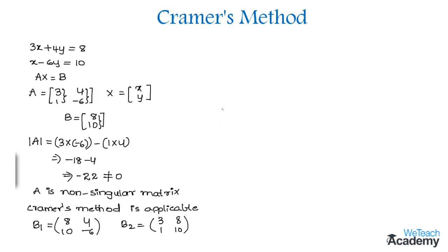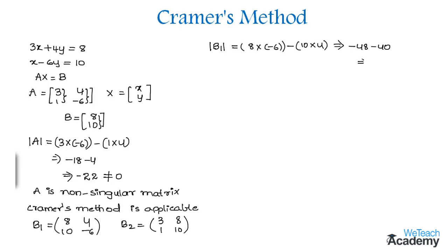Now the next step is to find the determinant of matrix b1. The determinant is AD minus BC, which is 8 × (-6) minus 10 × 4. That gives us -48 - 40, and adding we get -88, which is the value of the determinant of matrix b1.